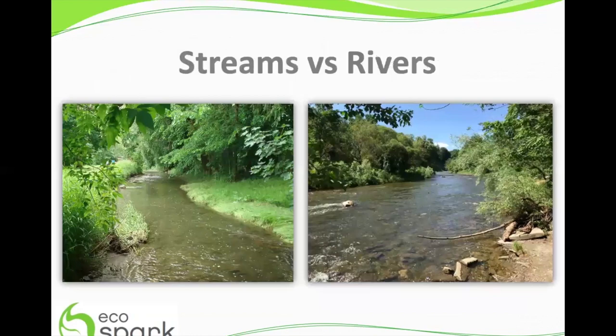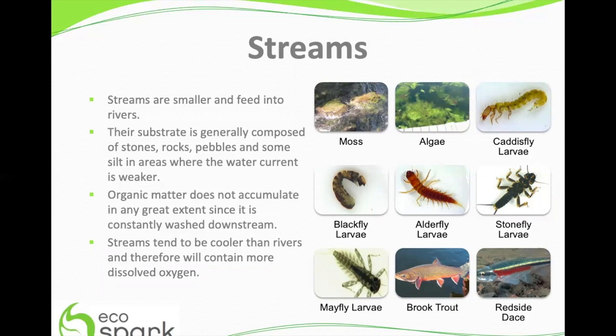Let's first look at streams and rivers. Streams are smaller and feed into rivers. Their substrate is generally composed of stones, rocks, pebbles, and some silt in areas where the water current is weaker. Organic matter doesn't typically accumulate to any great extent since it is consistently washed downstream. Streams tend to be cooler than rivers and therefore will contain more dissolved oxygen. Aquatic bugs found in streams, especially those with strong currents, often have certain features such as hooks or suction cup-like mechanisms that help them attach to rock surfaces so they aren't being washed downstream after heavy rains.